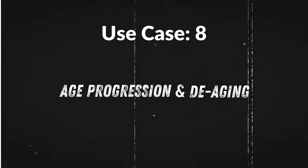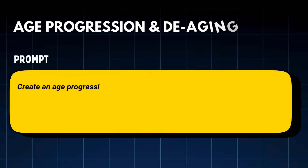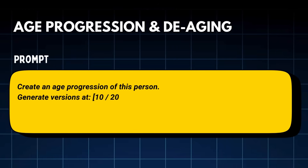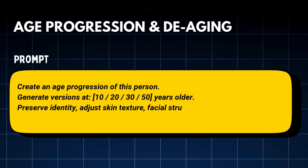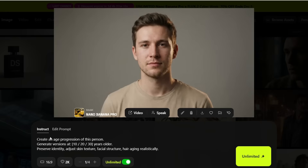Use case 8: Human face age progression. Nano Banana Pro can show you the aging of an actual human face. Prompt: 'Create an age progression of this person — generate versions at 10, 20, 30, and 50 years older. Preserve identity, adjust skin texture, facial structure, and hair aging realistically.' This is genuinely unsettling in how accurate it feels. The aging follows real human biology — not exaggerated, not cartoonish. This is the same person, just decades later.